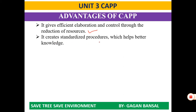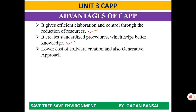It creates standardized procedures which help through better knowledge. With the help of computer-aided process planning, we can generate effective SOPs — that is, standard operating procedures — which help reduce efforts as well as the cost of running high-volume work. The last advantage is it lowers the cost of software creation and also supports a generative approach, which we have already discussed in the types of CAPP — that is, when we want to create a new technology or process plan that does not yet exist. There also CAPP is very effective.